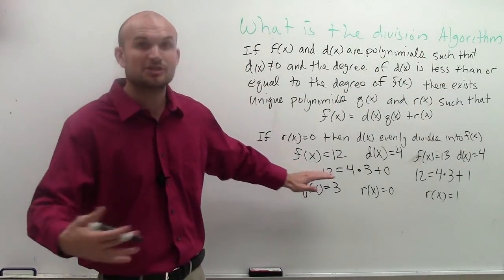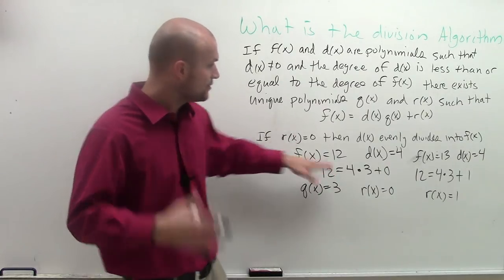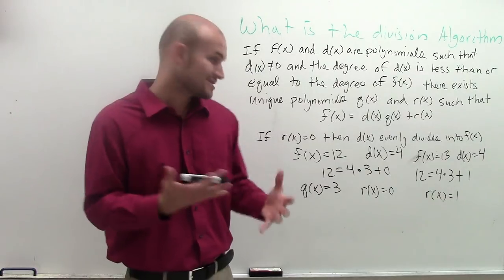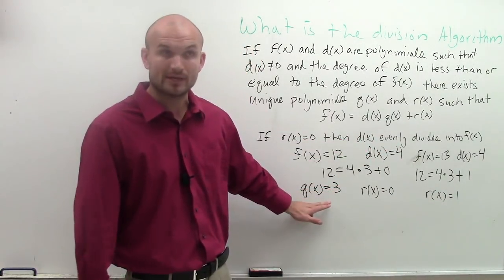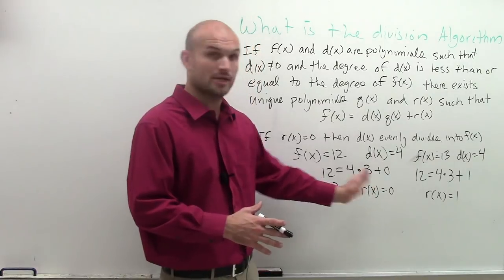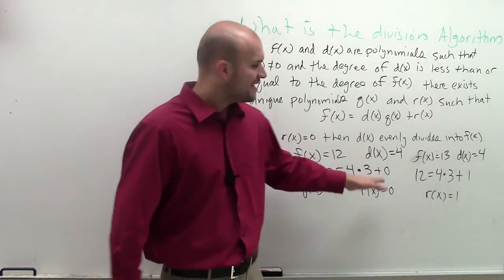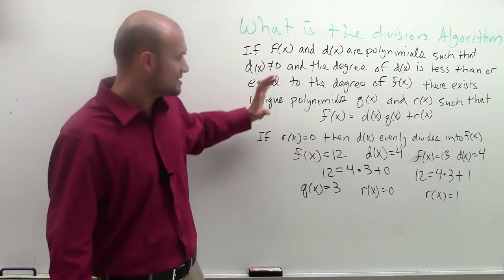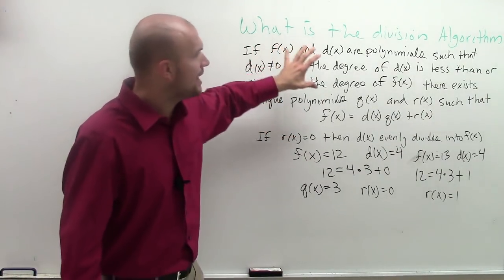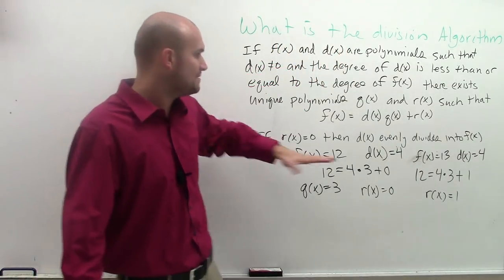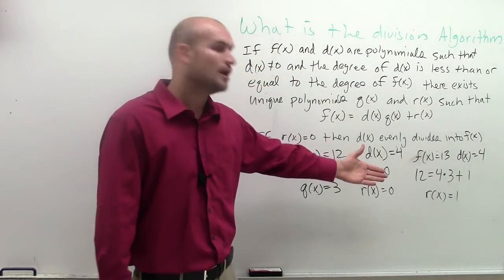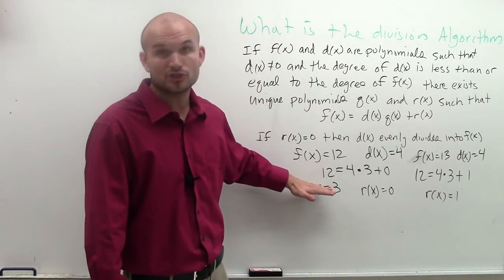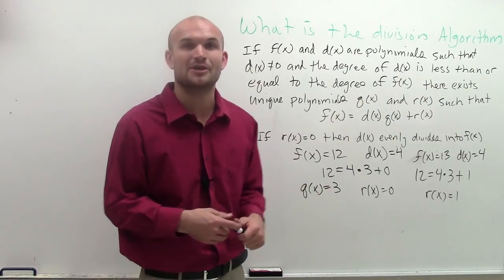And remember, f of x is going to be our dividend — what we can divide into. d of x is going to represent our divisor. q of x represents our quotient, which is like the answer, because 12 divided by 4 equals 3, or as we write it as a unique polynomial, 4 times 3 equals 12. And r of x represents our remainder. So all polynomials by the division algorithm can be written in the format of d of x times q of x plus your remainder equals your dividend, or your function f of x. There you go.